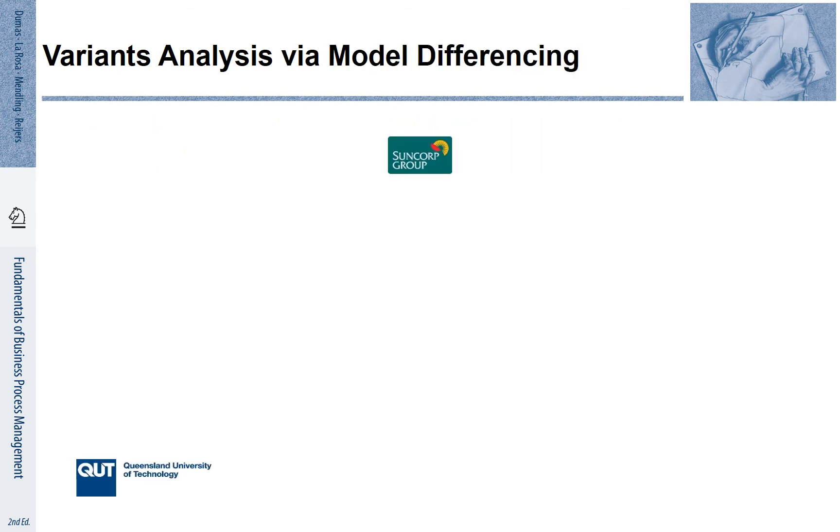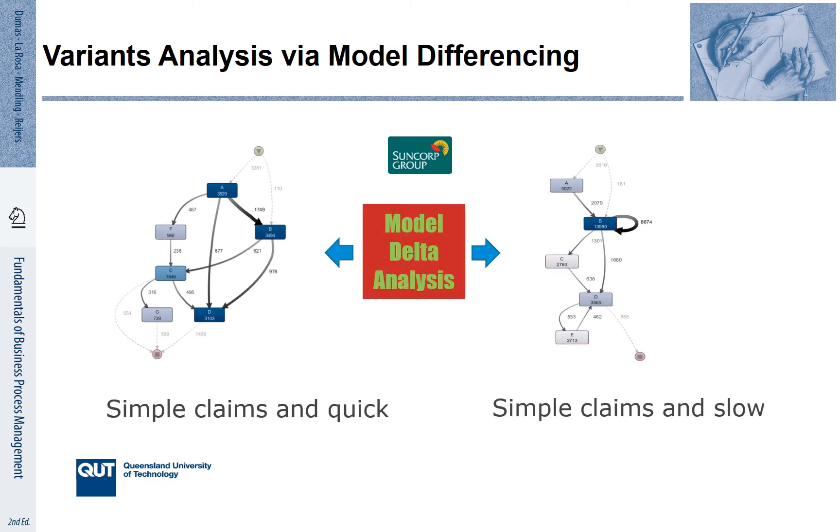Let's have a look at a few examples that illustrate this idea. The first is an example of a project that was conducted with the Australian insurance group Suncorp. Suncorp observed that there were several claims that they received that could be classified as simple. You would usually expect that a simple claim is also processed quickly. Surprisingly, it turned out that there were simple claims that were processed quickly, while other simple claims were processed slowly.